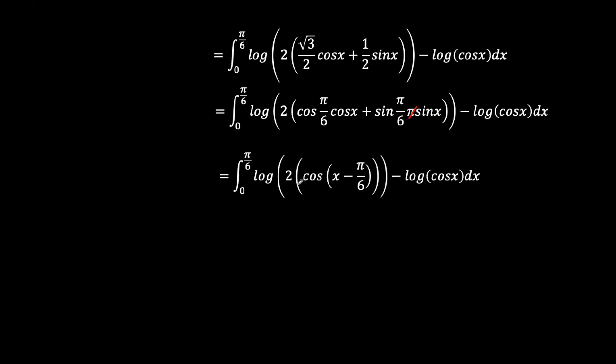Now again we can use the rule of logarithm and then separate 2 and the cosine x minus pi over 6. So now we have the integral of log 2 plus log cosine x minus pi over 6 minus log cosine x.